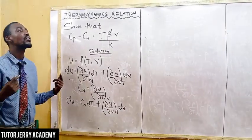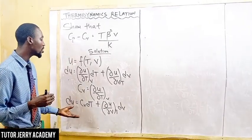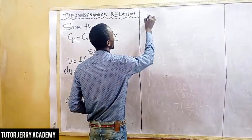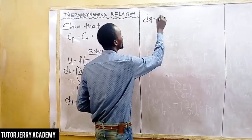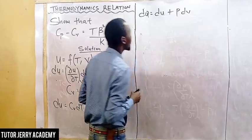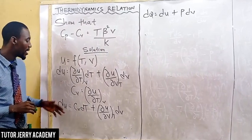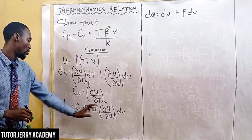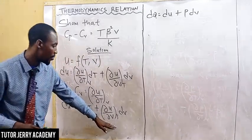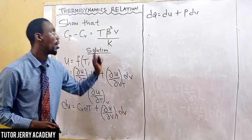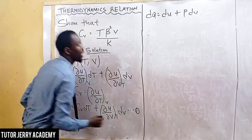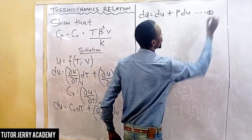The next thing is we recall from the First Law of Thermodynamics that dQ equals du plus P dV. From here we already have our du: du equals Cv dT plus the partial derivative of u with respect to V, keeping T constant, dV. Let's call this equation one and this equation two.